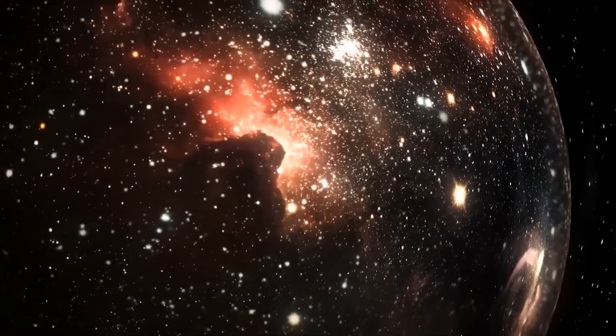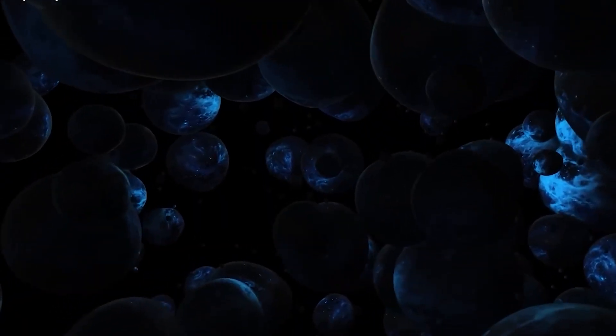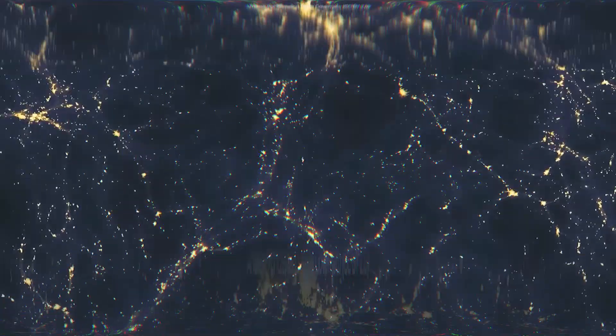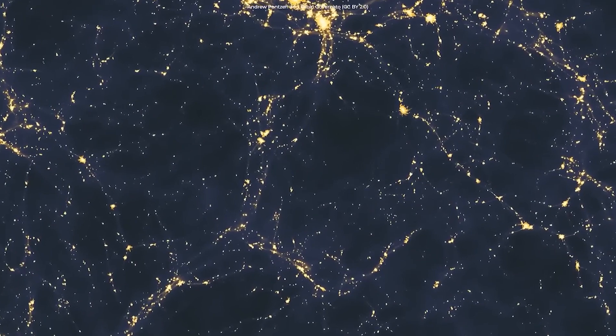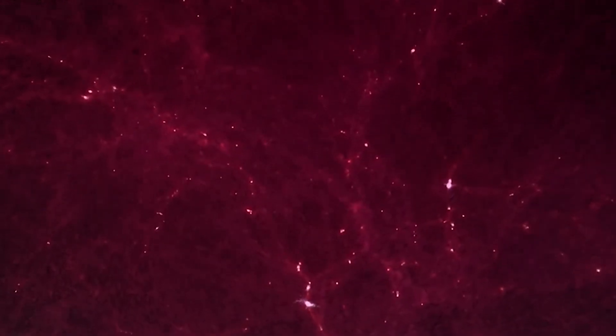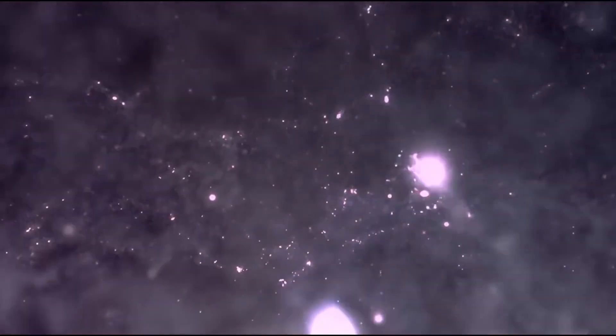This emptiness is not just a curiosity but has significant implications for our understanding of the universe. One of the most surprising things about the Boötes Void is that it challenges some of the fundamental assumptions we have about the large-scale structure of the universe. According to our current models, the universe should have a fairly uniform distribution of matter, with galaxies and clusters spread out evenly across space. However, the Boötes Void seems to be an exception to this rule, suggesting that our models may be incomplete or inaccurate.